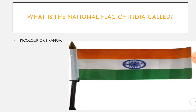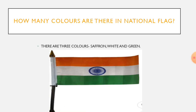What is the national flag of our country India called? It is called tricolor or tiranga. Tricolor means it has three colors. The national flag of our country is called tiranga or tricolor. How many colors are there in our national flag? There are three colors in our national flag. These are saffron, white and green.